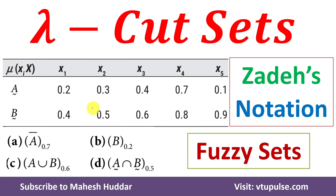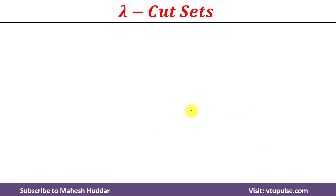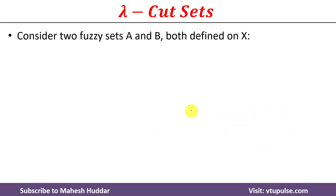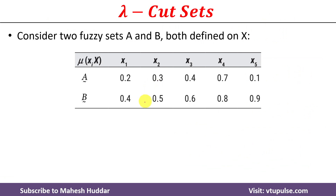Welcome back. In this video I will discuss how to find the lambda cut set for given fuzzy sets using Jade notation. We have been given two fuzzy sets A and B with five members x1, x2, x3, x4, and x5 with membership values. Using these fuzzy sets we need to use Jade notation to find the lambda cut for the following sets.